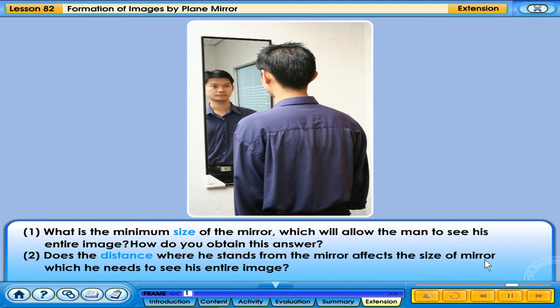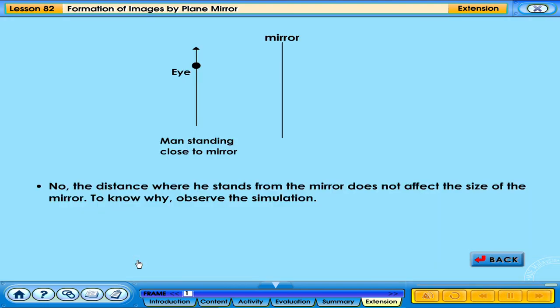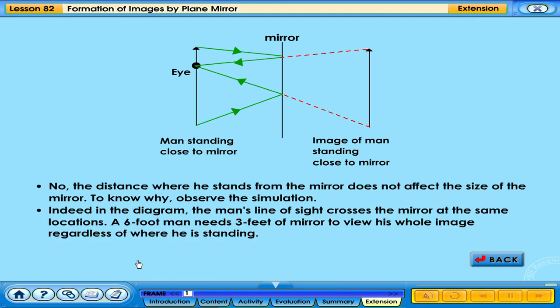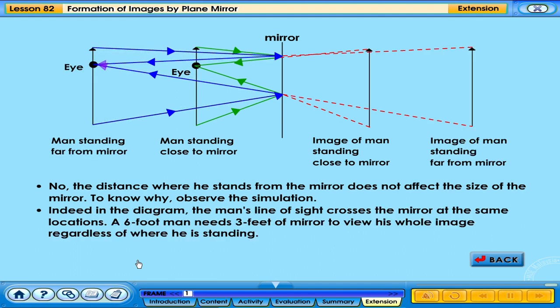Does the distance where he stands from the mirror affect the size of the mirror he needs to see his entire image? No, the distance where he stands from the mirror does not affect the size of the mirror. Observe the simulation. Indeed, as shown in the diagram, the man's line of sight crosses the mirror at the same locations. A six-foot man needs three feet of mirror to view his whole image regardless of where he is standing.